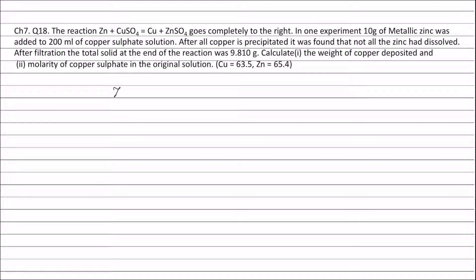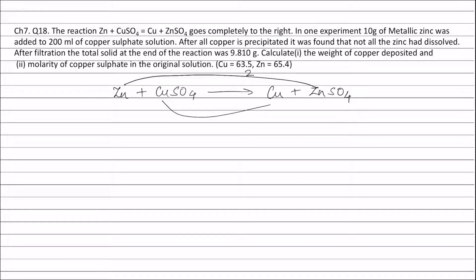The reaction is zinc plus copper sulphate forming copper plus zinc sulphate. When zinc changes to zinc sulphate, the change in oxidation number of zinc is 2 and the number of atoms of zinc is 1, therefore valency factor of zinc is 2. In copper sulphate to copper, the change in oxidation number of copper is 2 and number of atoms of copper is 1, therefore valency factor of copper is 2.